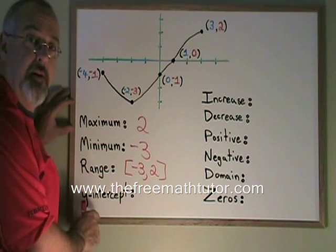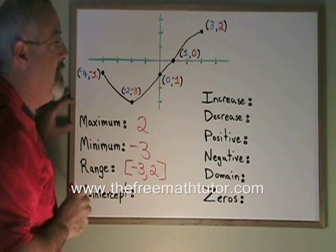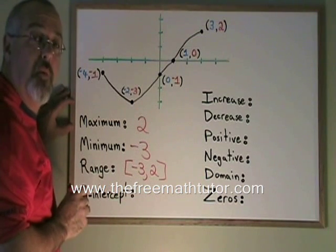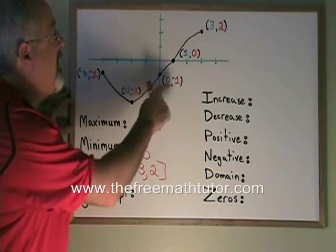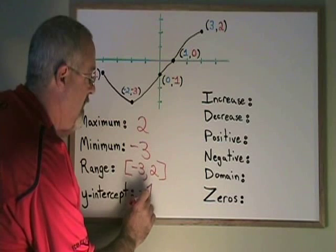The y-intercept is the point where the curve intercepts the y-axis. That point is 0, negative 1. And again, we're using our y-coordinate to find it. The y-coordinate of the y-intercept is negative 1. So that is our answer.